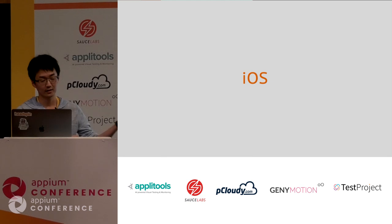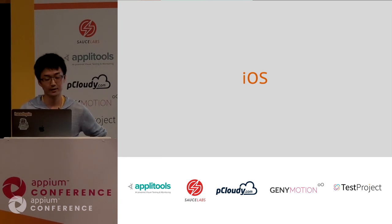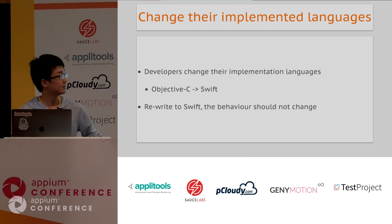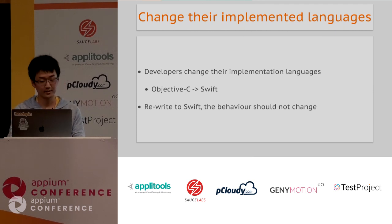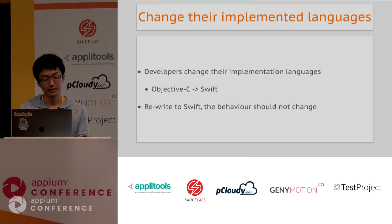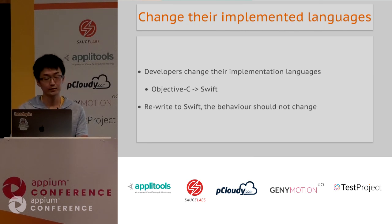iOS has only one class with UIViewController, so the Fragment reuse case doesn't happen as frequently in iOS. But what happened in iOS was this: Apple published a new programming language, Swift, and many developers started converting Objective-C code to Swift. iOS developers tried to rewrite their implementation in Swift while keeping current behavior. This kind of case is also easy to break the non-UI layer. In mobile, implementation tied to UI components is very difficult to make testable, so it's difficult to catch such regressions at the unit test level.